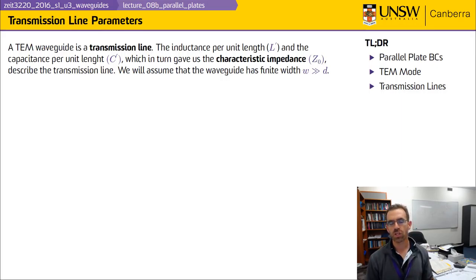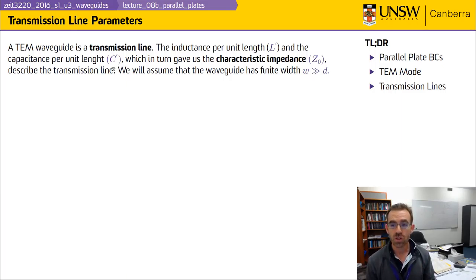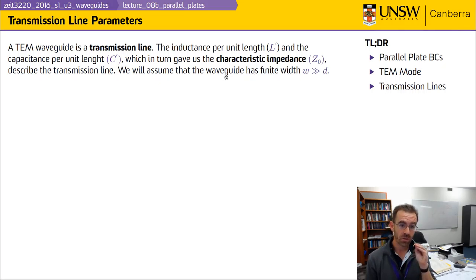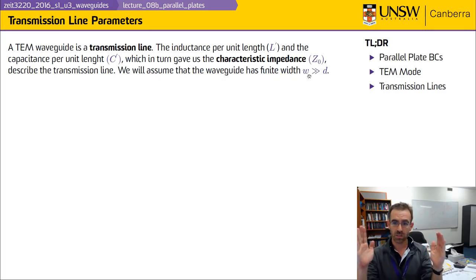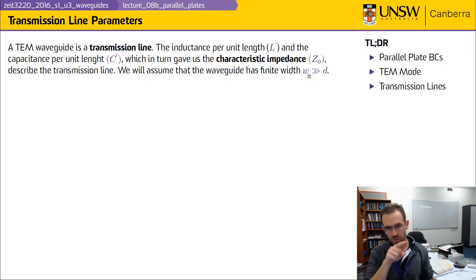Earlier in the semester, you saw that wave propagation on a transmission line can be described by two important parameters: the inductance per unit length L' and the capacitance per unit length C'. Those two give you the characteristic impedance and the phase velocity. We're now going to look at how those capacitance and inductance per unit length values are driven by the field solution to the Helmholtz equation, again assuming the parallel plate is wide — width W much greater than plate separation d — so we can ignore fringing fields.